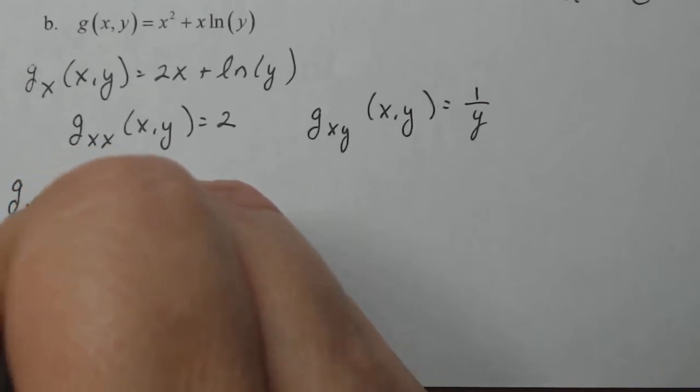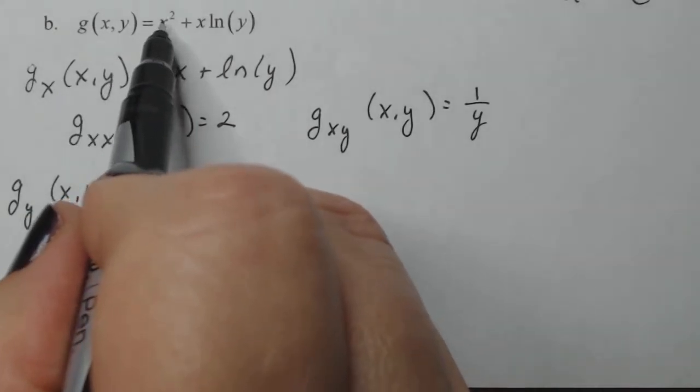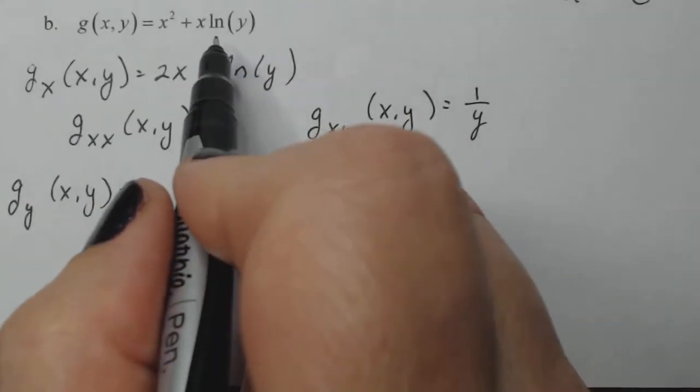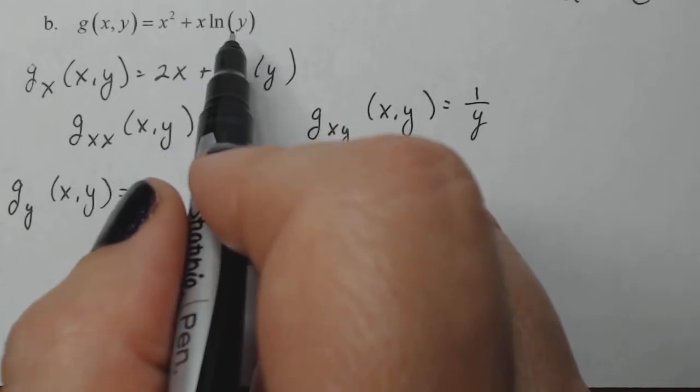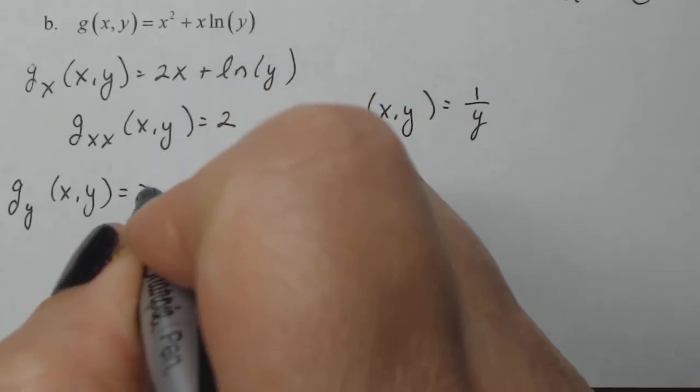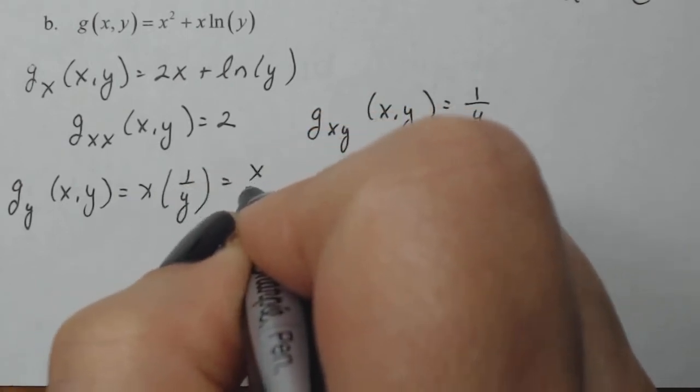G sub y of x, y. Well, let's see, that'll be zero because that's a constant with respect to y. This guy will be, that's a constant and that is a variable, so it should be x times one over y, which is just x over y.